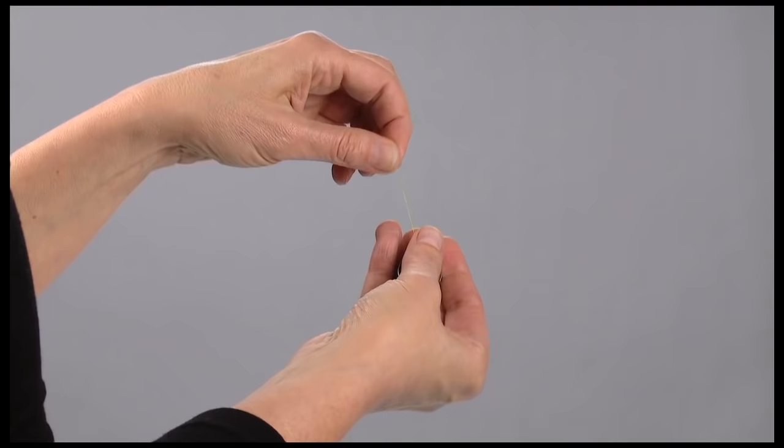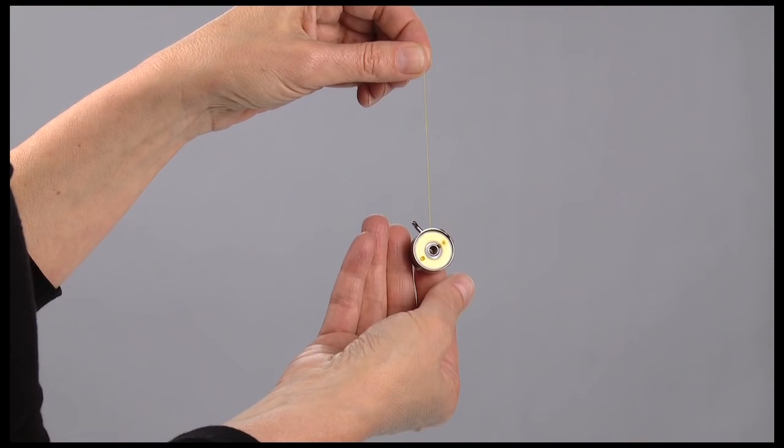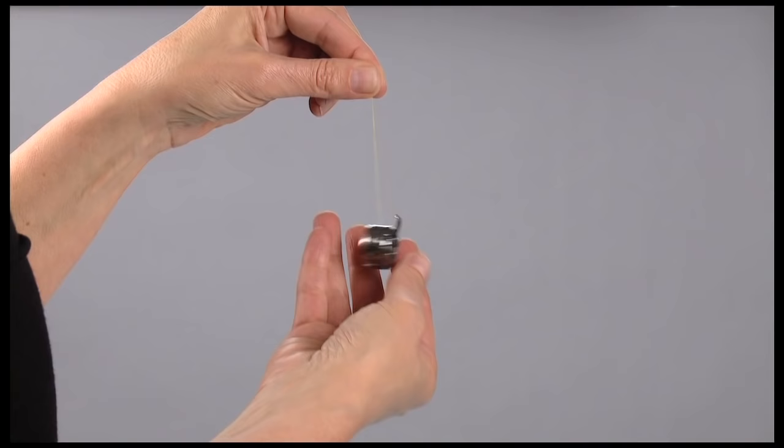The bobbin thread tension can be tested by first removing the bobbin case and bobbin. While holding the thread tail, snap your wrist once or twice. If the thread unwinds an inch or two, the tension is set correctly.